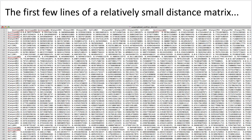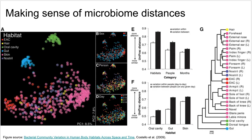Moving on to beta diversity — I had shown you this distance matrix and mentioned how you can't really look at it as a human and get any idea of the patterns present in your data set. We need to do something with this distance matrix to help interpret it. There are many different things you can do. This figure from a classic paper shows a few different approaches: ordination plots, bar charts or box plots, and dendrograms.